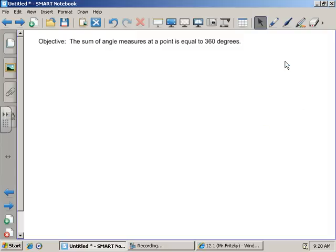Today we're going to learn that the sum of angle measurements at a point is equal to 360 degrees. For some of you, you already know this. You might not know this about math, but you already know this. Here's my point - all the angle measures around that point are equal to 360 degrees.